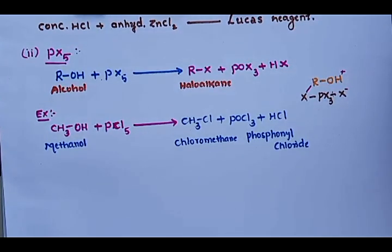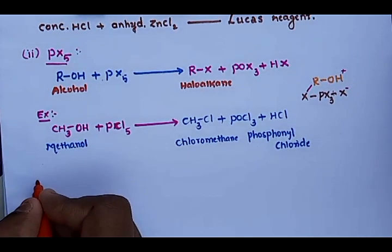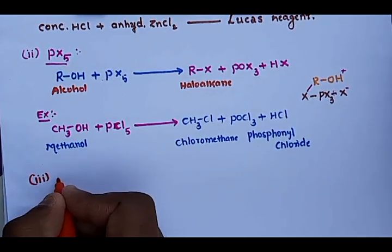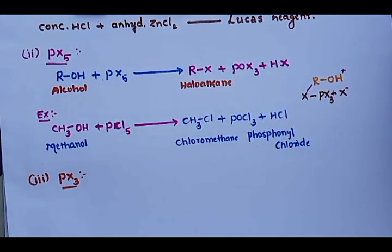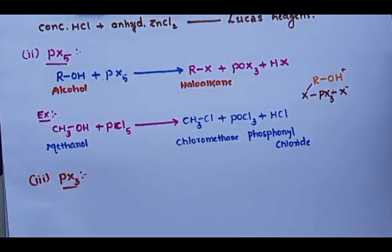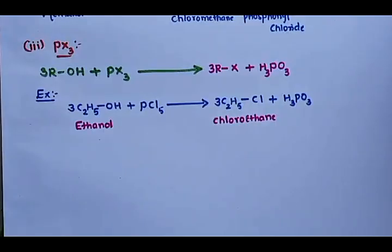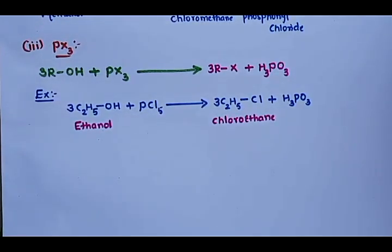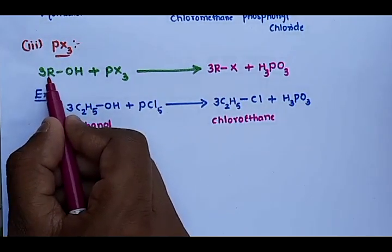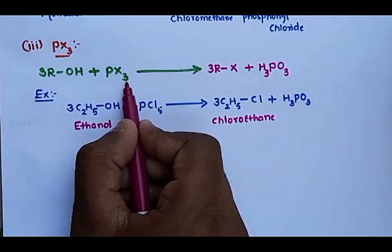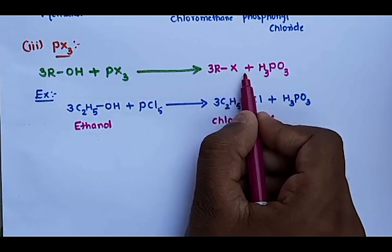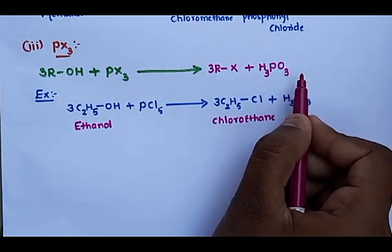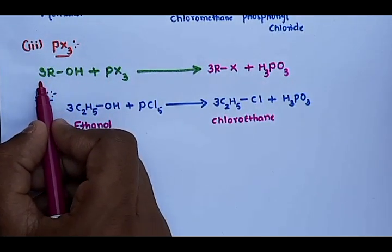Haloalkanes can also be prepared using PX₃ — phosphorus trihalide. The next method is: when three moles of alcohol are treated with phosphorus trihalide (PX₃), the product is three moles of haloalkane plus H₃PO₃.